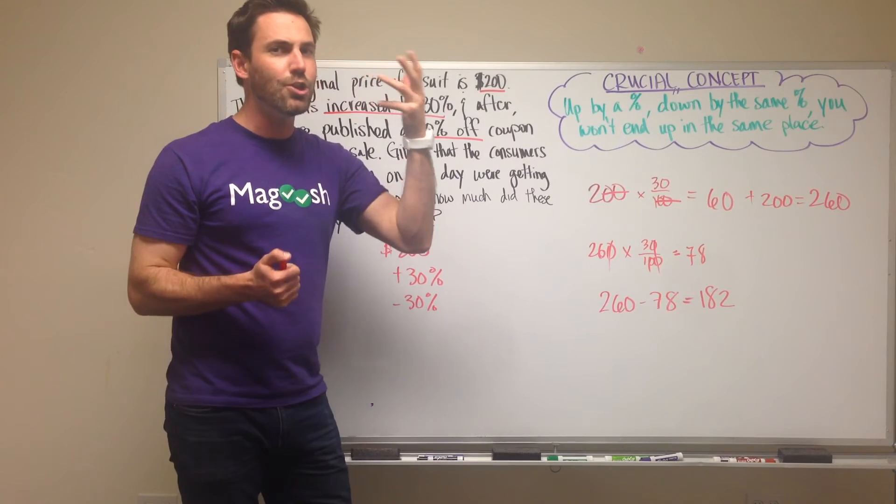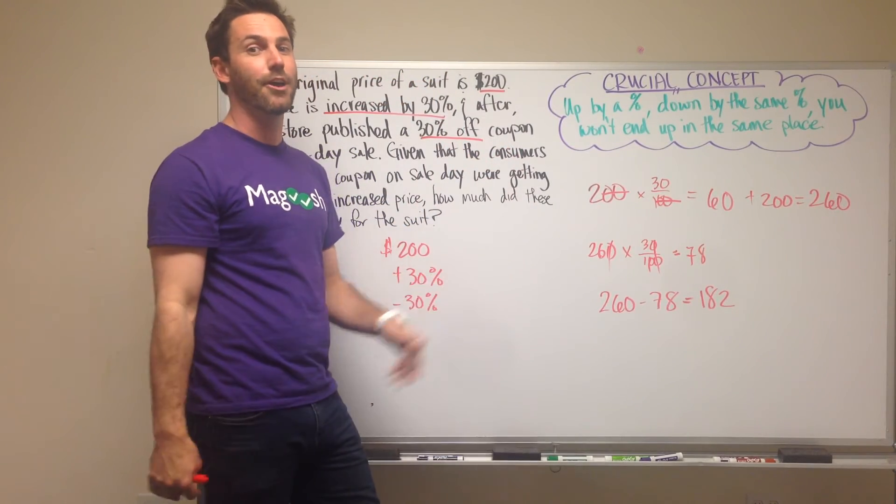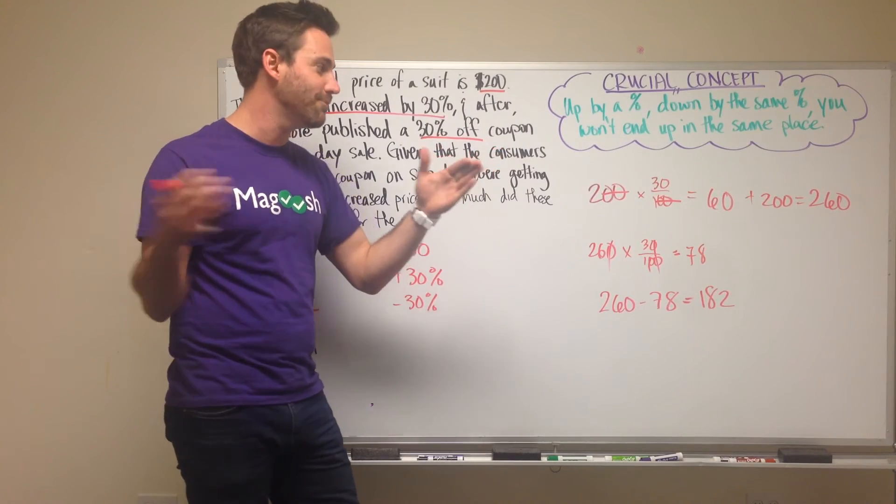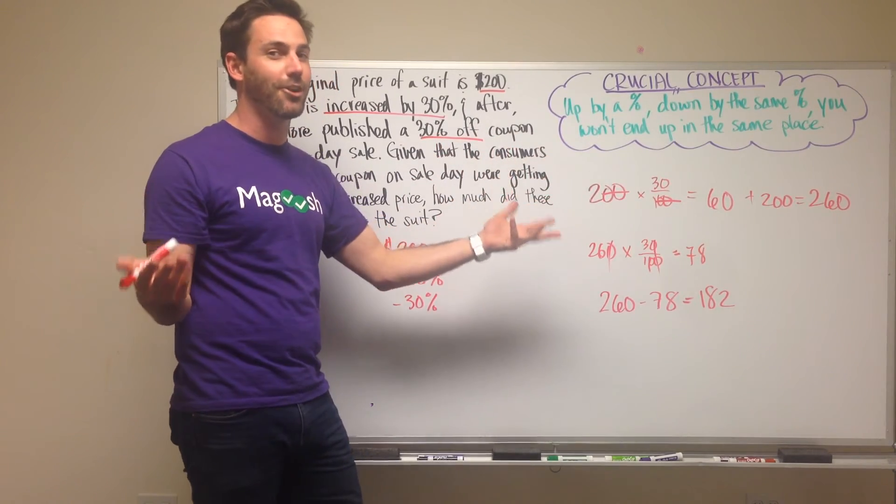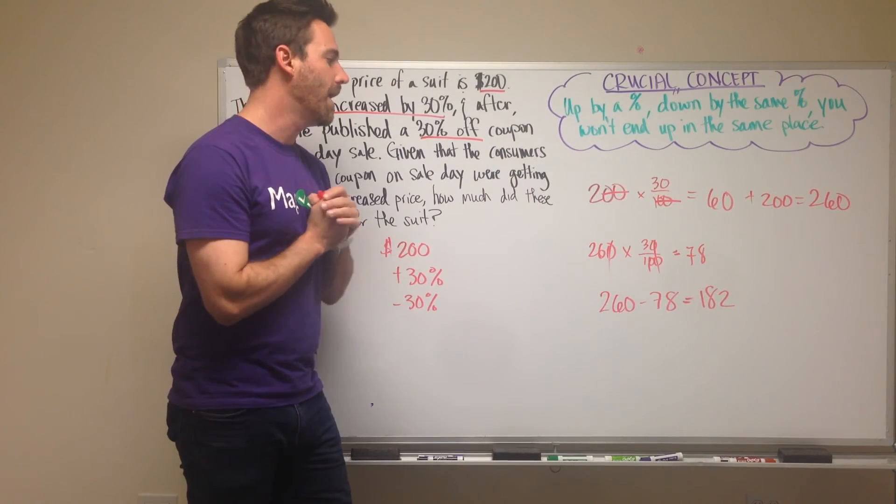And this is something we intuitively know. Like if I said, do you want 10% of $100 or 10% of $100,000, you would say give me 10% of $100,000 because it's a different value, you're going to end up with more money.